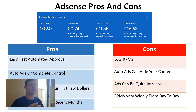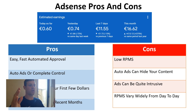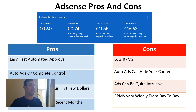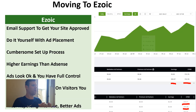The cons of AdSense are the lower RPMs — it's the lowest of the three companies. The auto ads are managed by artificial intelligence, so sometimes it can block your content and the ads can be quite intrusive, like the full-screen ad between page visits. RPMs also vary widely from day to day depending on how many clicks the ads get.